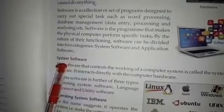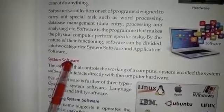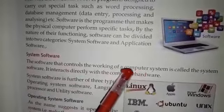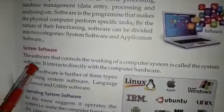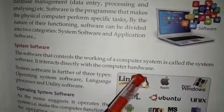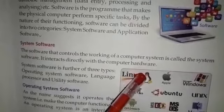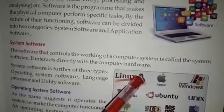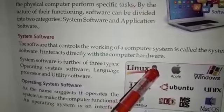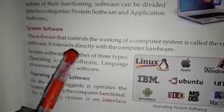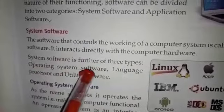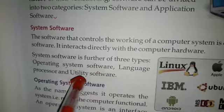Now comes to system software. The software that controls the working of a computer system is called the system software. It interacts directly with the computer hardware. System software एक ऐसा software होता है जो computer system के working को control करता है, इसे system software कहलाता है, या directly computer hardware के साथ interact करता है.